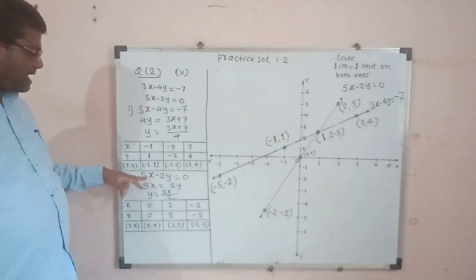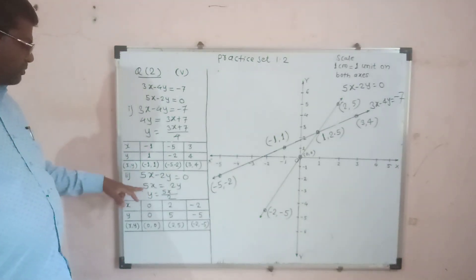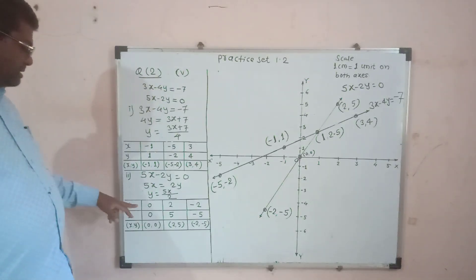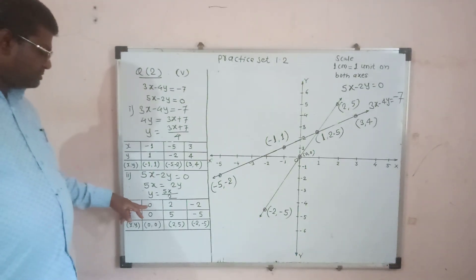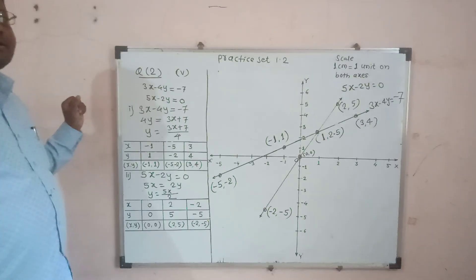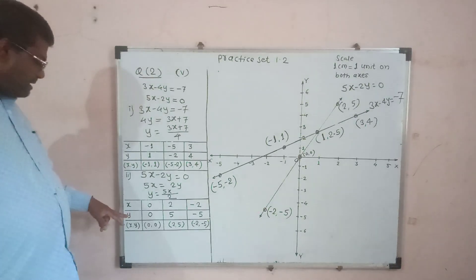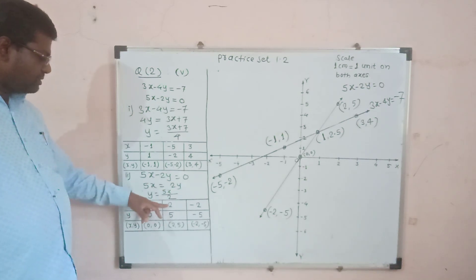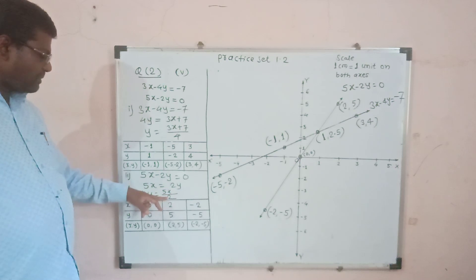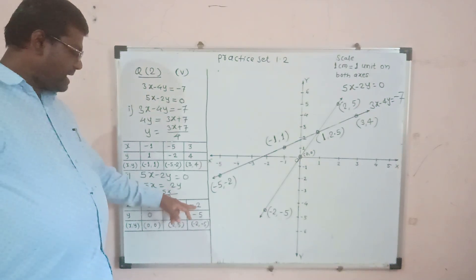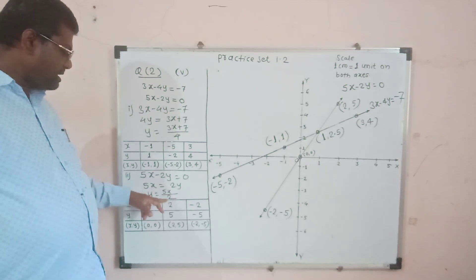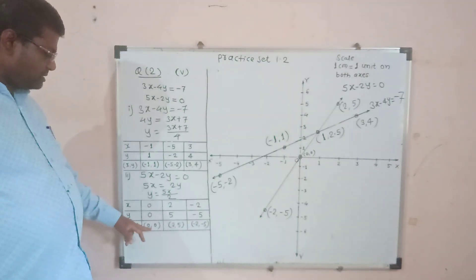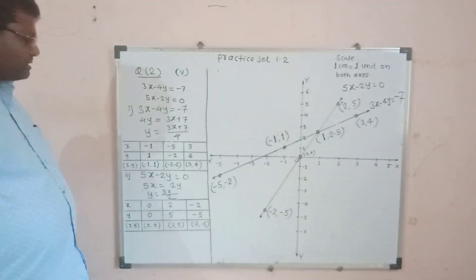For the second equation 5x minus 2y equals 0, y equals 5x upon 2. Take values of x as 0, 2, and minus 2. When x equals 0, y equals 0. When x equals 2, y equals 5. When x equals minus 2, y equals minus 5. Ordered pairs: (0, 0), (2, 5), (−2, −5).